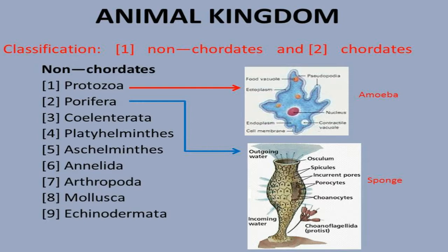The classification of non-chordates is as follows. The phyla you will learn are: Protozoa, Porifera, Coelenterata, Platyhelminthes, Aschelminthes, Annelida, Arthropoda, Mollusca, and Echinodermata. It is important to know these phyla of non-chordates.